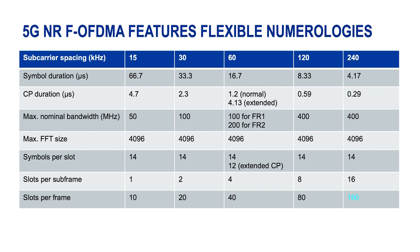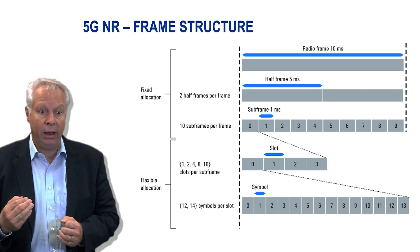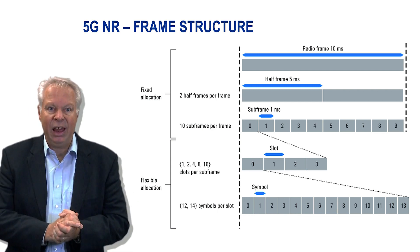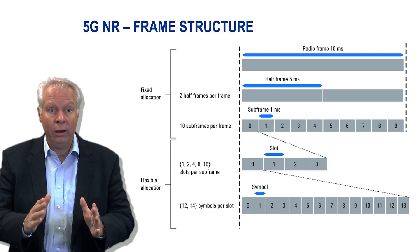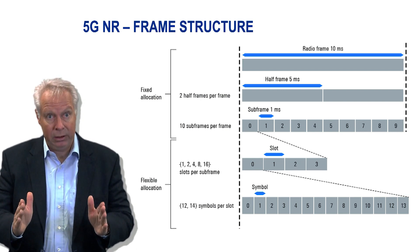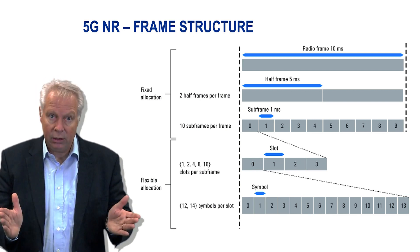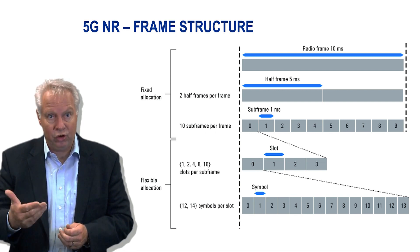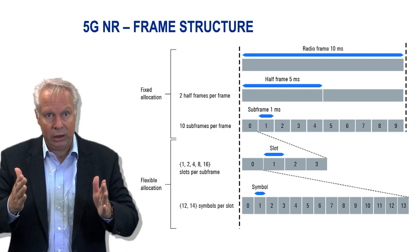The numerology slot structure is defined as 14 OFDMA symbols per slot. This brings into a definition in the time domain shown in the next slide. We keep at the highest level the 10 millisecond raster — one radio frame equals 10 milliseconds. This is also applied in 3G, 4G, and LTE.